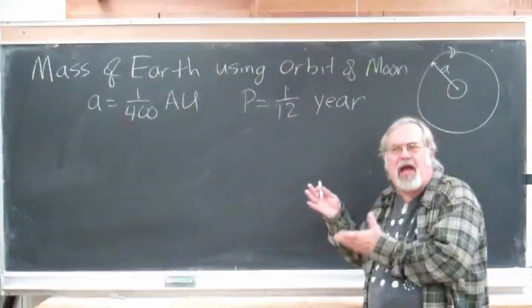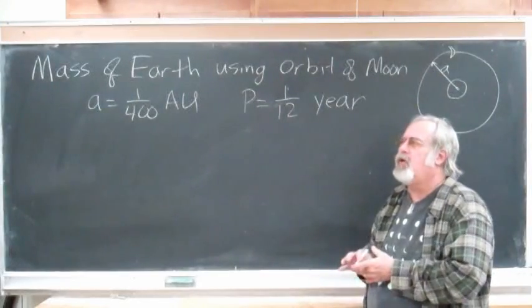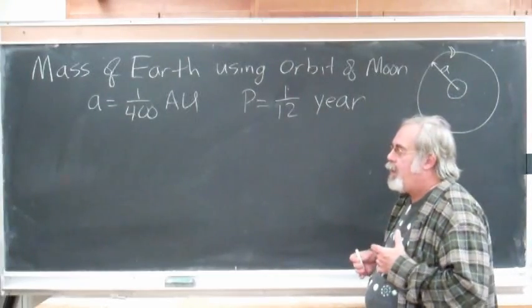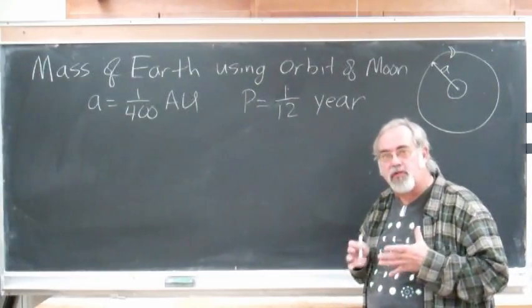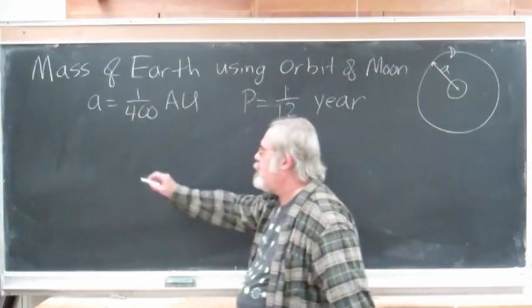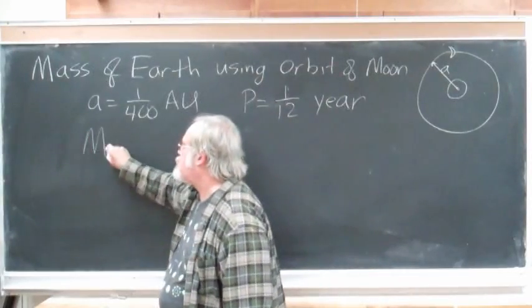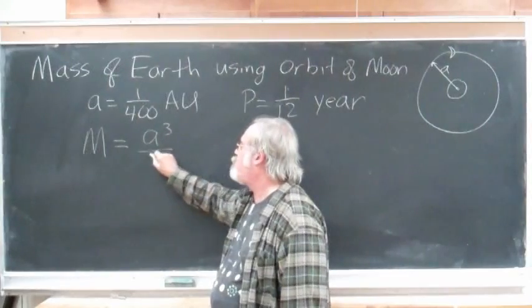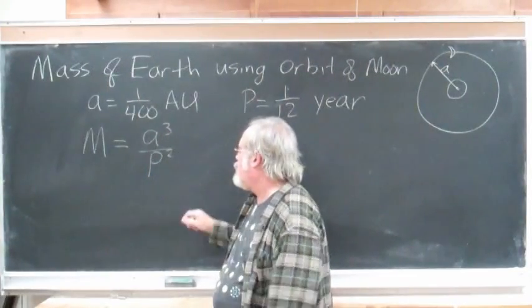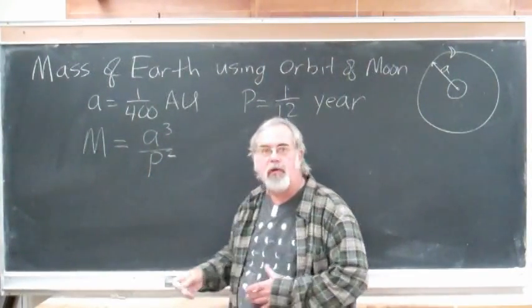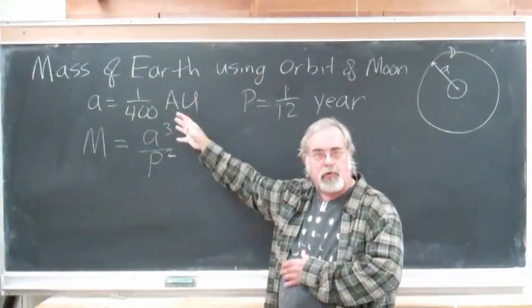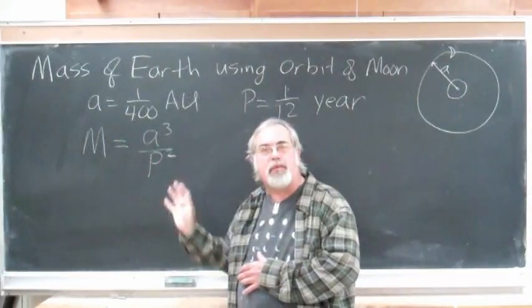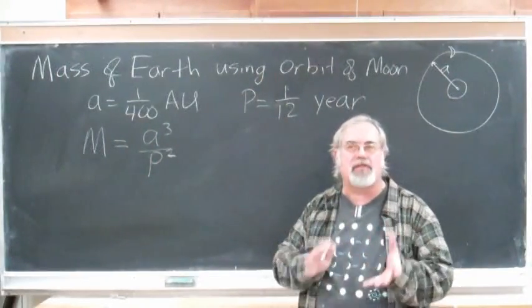Alright, well, how do we calculate the mass from these things here? Well, Newton's form of Kepler's law is that the mass of the central body, M, is given by the size of the orbit cubed divided by the period squared. Now, if we measure the size of the orbit in astronomical units, such as we have here, and the period in years, then the mass will come out to be in terms of the mass of the Sun.